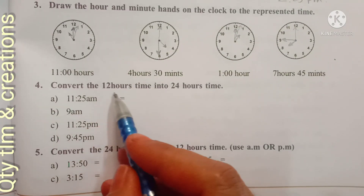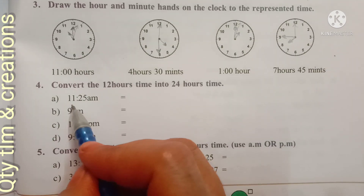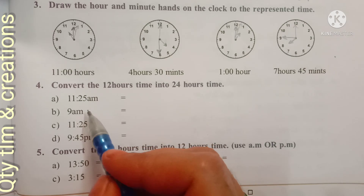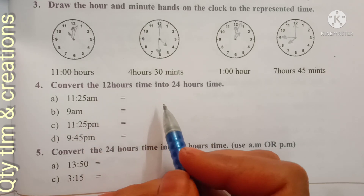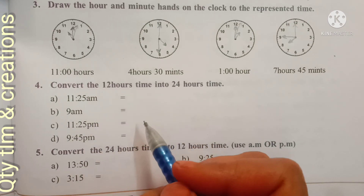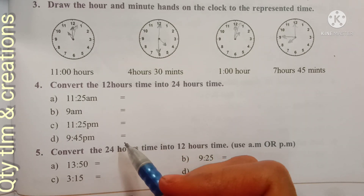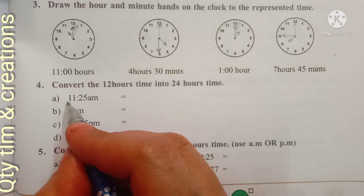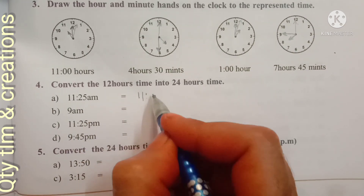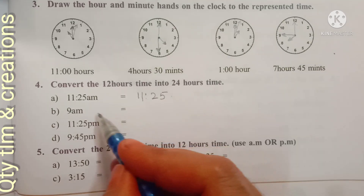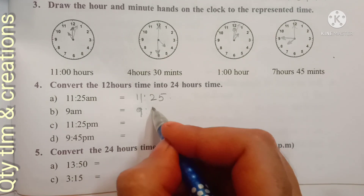Next: convert 12-hour time into 24-hour time. For 11:25 AM, we do not need to convert because from midnight 12 to before 12 noon is the same in both 12-hour and 24-hour formats. So 11:25 AM equals 11:25. And 9 AM equals 9 hours.